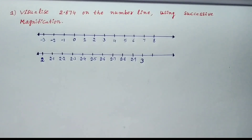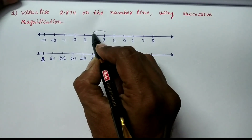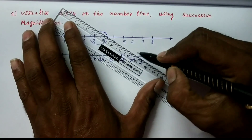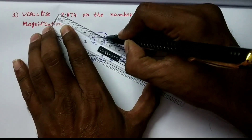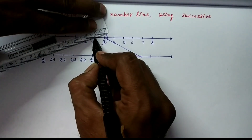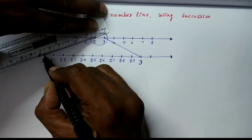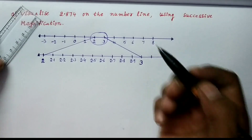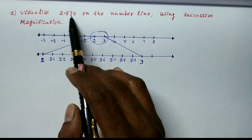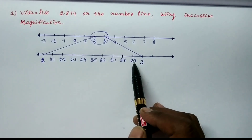Mention 3 in bigger size. By successive magnification, 2.874 lies between 2 and 3, so join this 3 to the 3 on the previous line, and join from this 2 to the 2 below. Now 2.874 lies between 2.8 and 2.9, so we draw another number line.